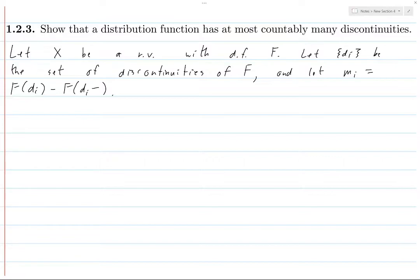Okay, so since di is a discontinuity point of F, we know that each mi is going to be strictly positive. And it's strictly positive because distribution functions are increasing.